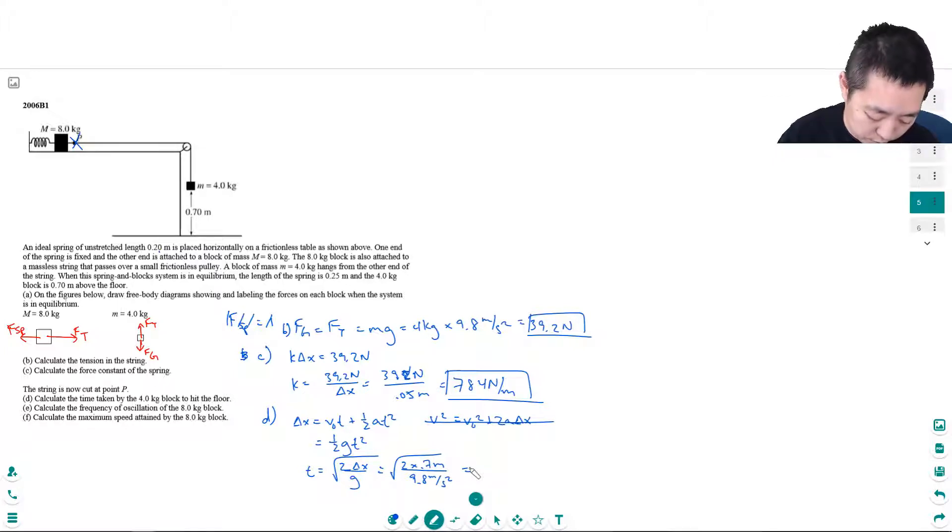So we're gonna do square root of 2 times 0.7 divided by 9.8 and I get 0.378 seconds.